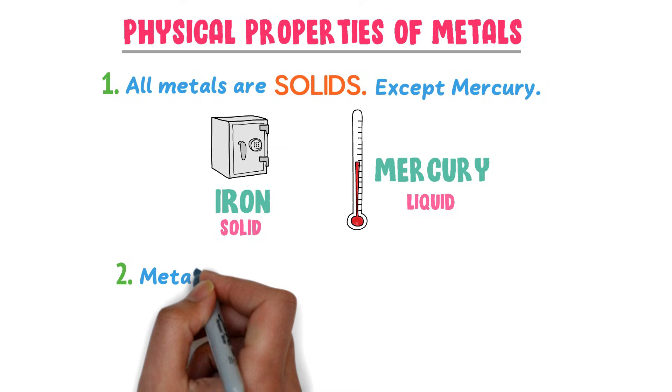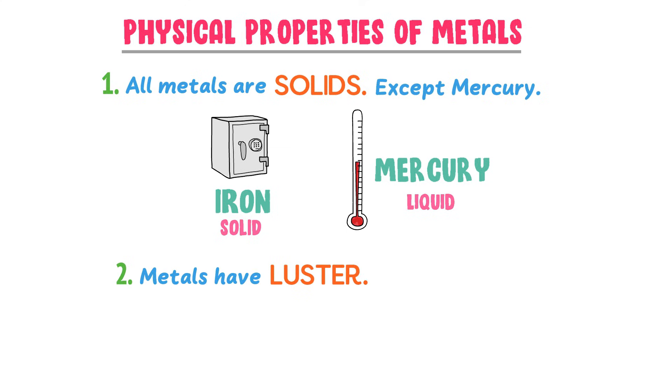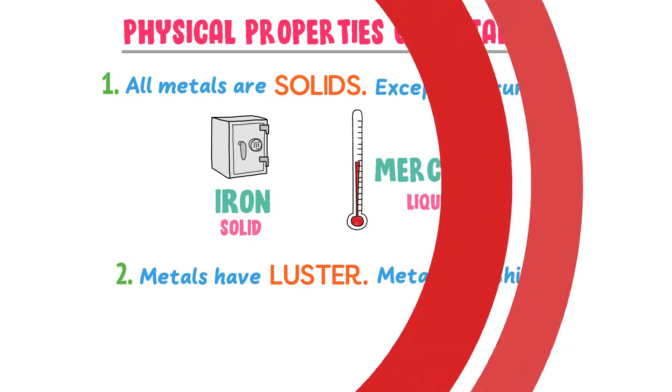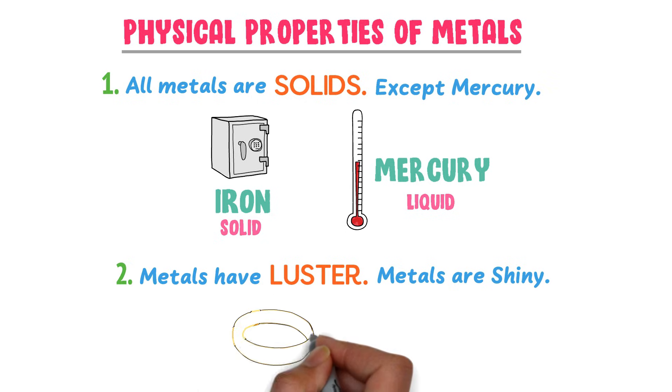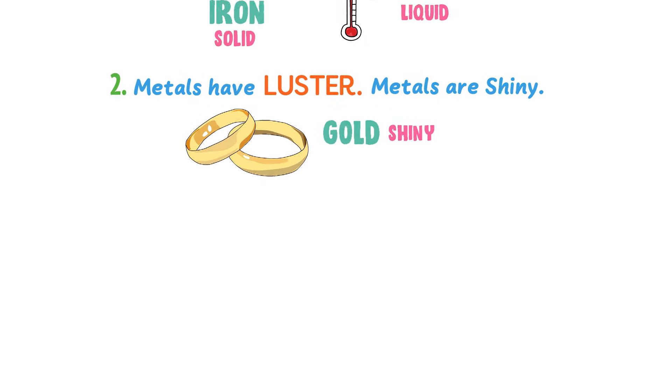Secondly, metals have luster. It means that metals are shiny. For example, gold is a very shiny metal.